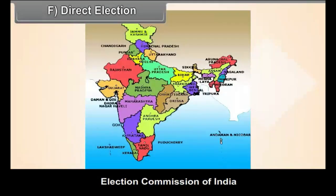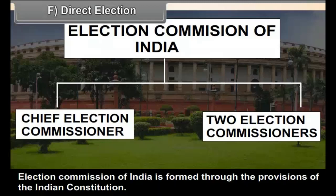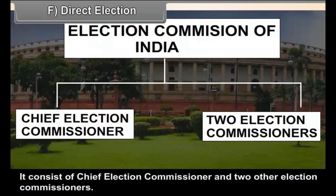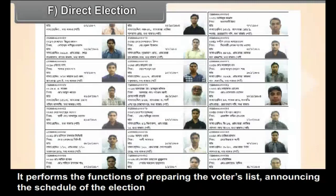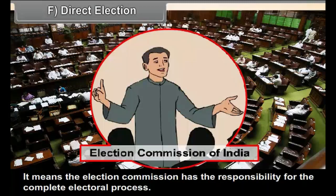Election Commission of India is formed through the provisions of the Indian Constitution. It consists of a Chief Election Commissioner and two other election commissioners. It performs the functions of preparing the voters list, announcing the schedule of the election, and is responsible for conducting free and fair elections. The Election Commission has the responsibility for the complete electoral process.